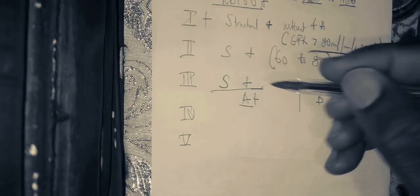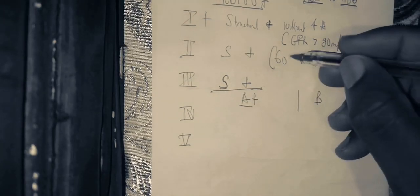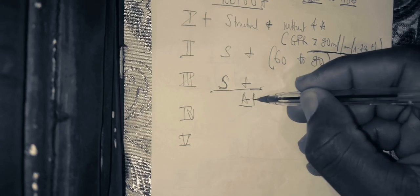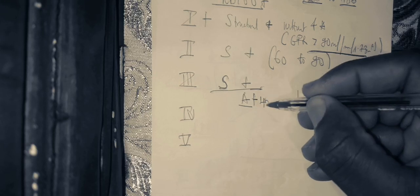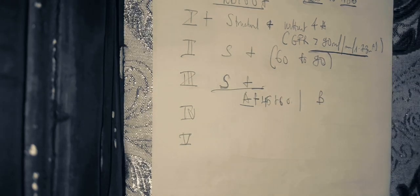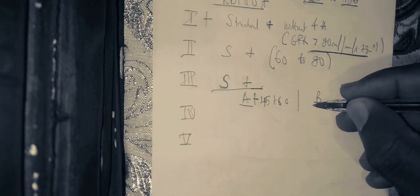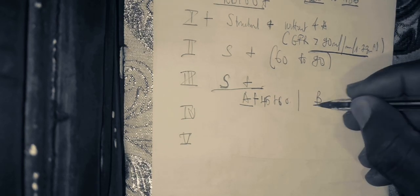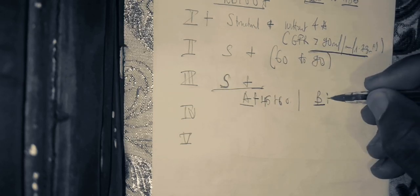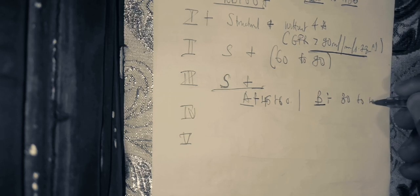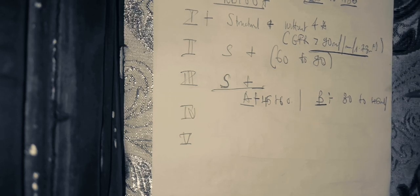For CKD Stage 3a, the structural abnormality of the kidney is accompanied by a functional abnormality of 45 to 60 mls per minute per 1.73 m² of surface area. CKD Stage 3b is a structural abnormality with a functional abnormality of 30 to 45 mls per minute per 1.73 m².